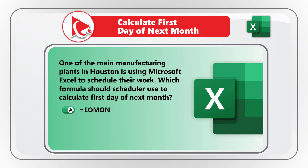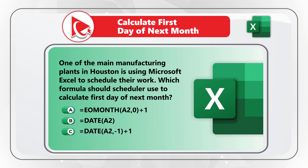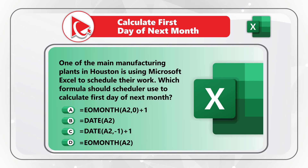Choice A: EOMONTH with the parameters A2 comma 0 plus 1. Choice B: using the DATE formula. Choice C: using the DATE formula but with different arguments. And then last but not least, Choice D: EOMONTH with the argument A2.